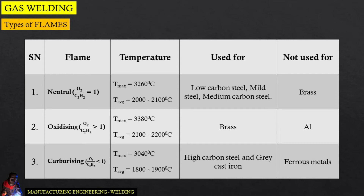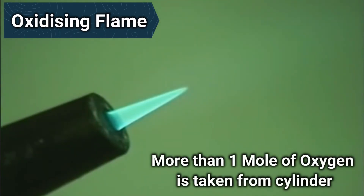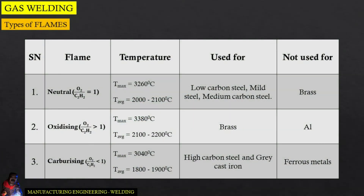Neutral flame is not used for brass. In case of oxidizing flame, the oxygen to acetylene ratio is more than one, which means more than one mole of oxygen is fetched from the cylinder. The maximum temperature is 3380 degrees Celsius and the average temperature lies between 2100 to 2200 degrees Celsius. Oxidizing flame is used primarily for brass and it is not used for aluminum.